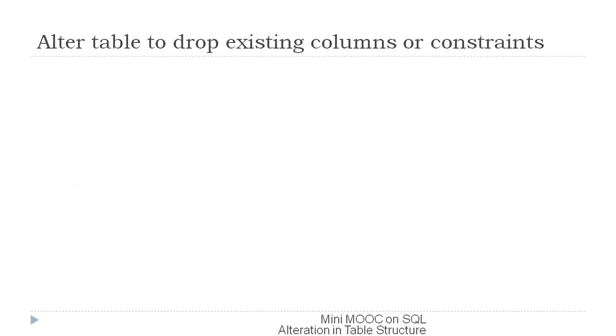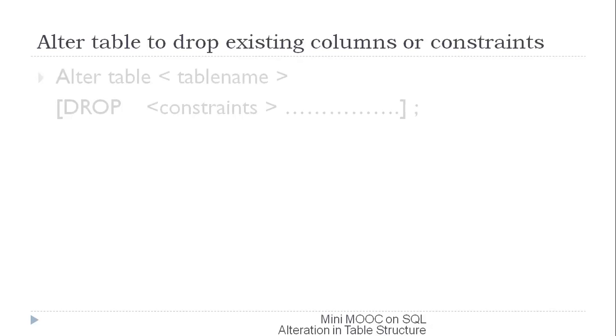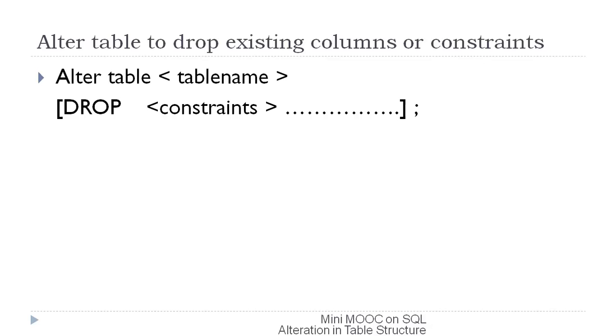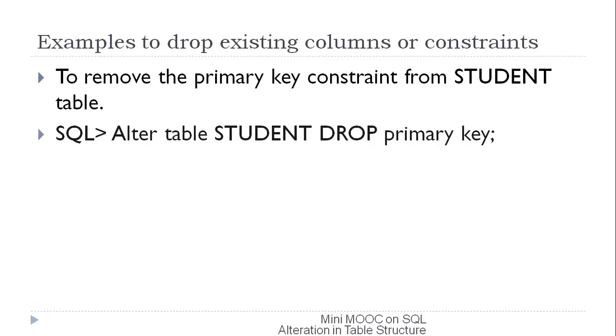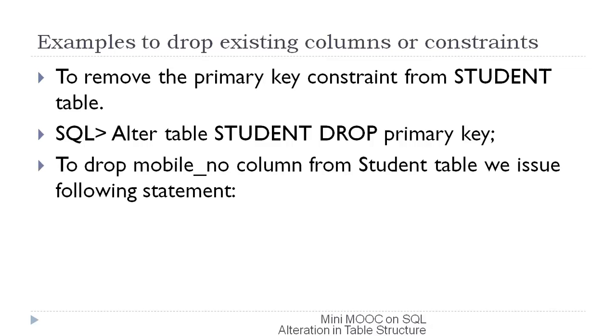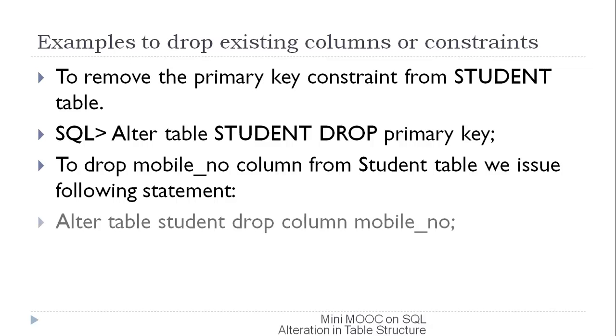Sometimes after enforcing a constraint during table creation, we realize it is not required, or some columns are no longer applicable and we wish to drop them. The solution is the DROP option of ALTER TABLE. To remove the primary key constraint from the student table, use ALTER TABLE student DROP PRIMARY KEY. To drop the mobile_number column, use ALTER TABLE student DROP COLUMN mobile_number.